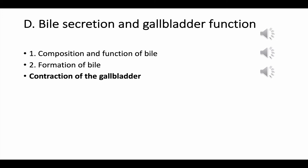Bile secretion and gallbladder function: bile contains bile salts, phospholipids, cholesterol, and bile pigment, which is called bilirubin. Bile salts are amphipathic molecules because they have both hydrophobic and hydrophilic portions. In aqueous solution, bile salts orient themselves around droplets of lipid and keep the lipid droplets dispersed, which is called emulsification, aiding in the initial digestion and absorption of lipids by emulsifying and solubilizing them in micelles.